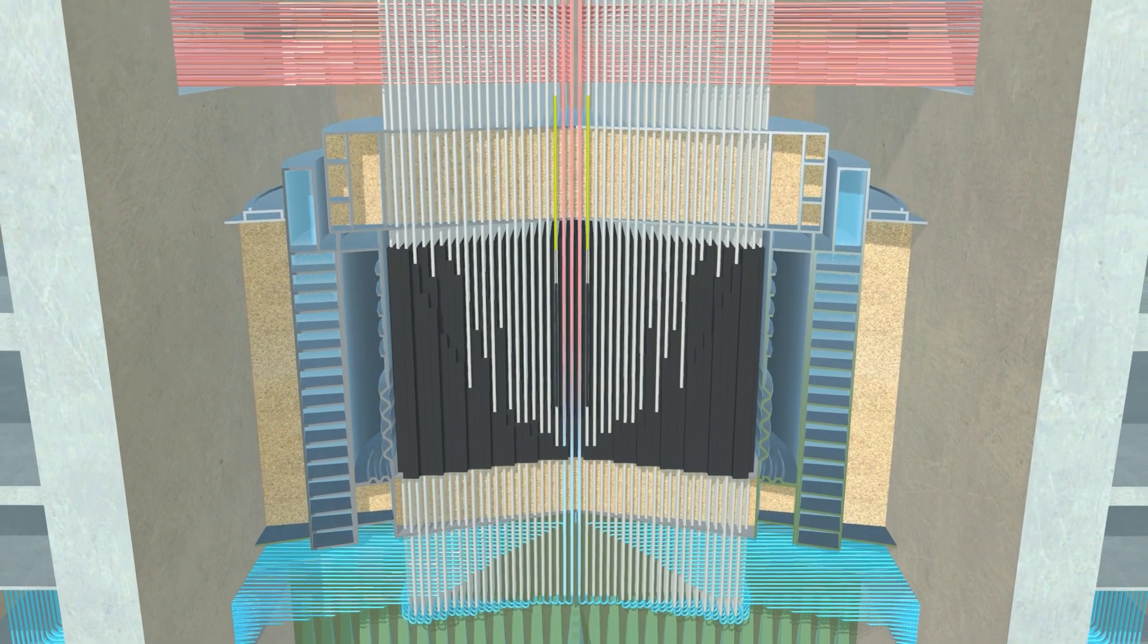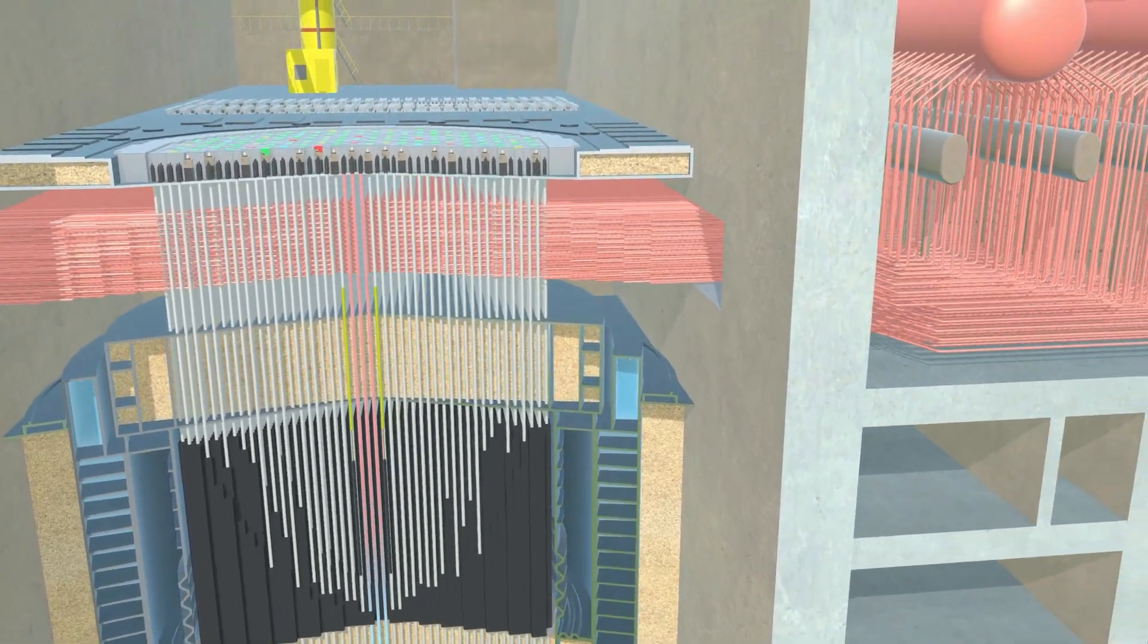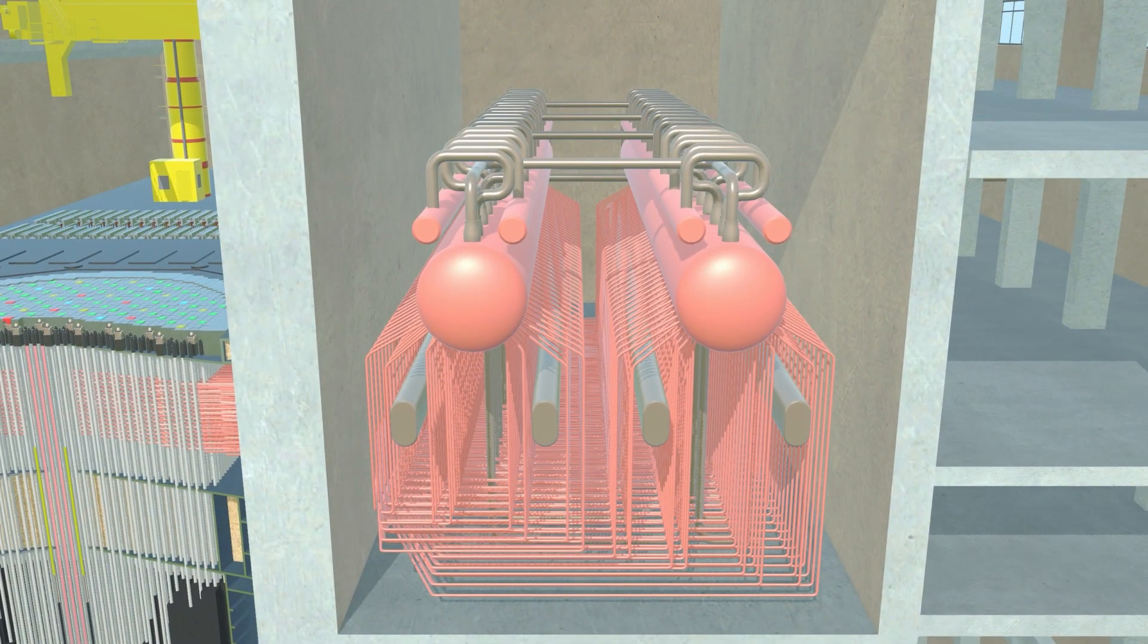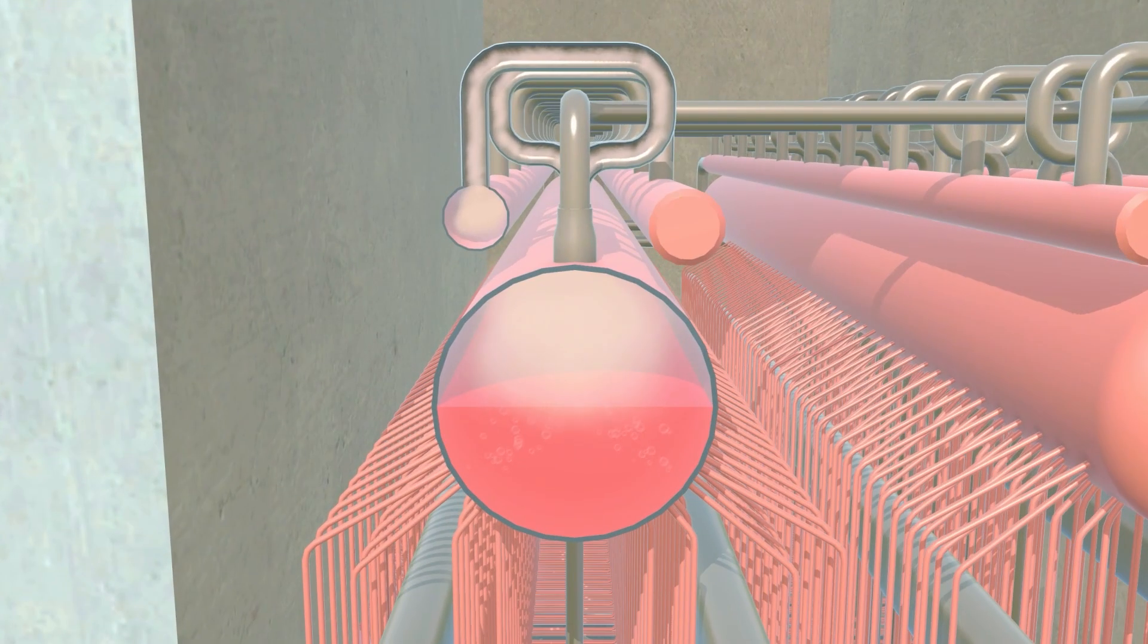The resulting water-steam mixture coming out of the individual channels at the top is fed into large separator drums through a system of pipes. Here the water and steam are separated by gravity.